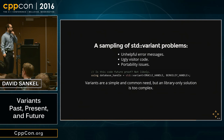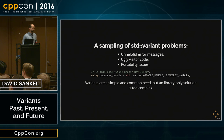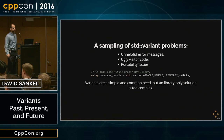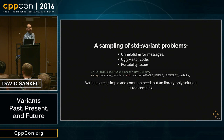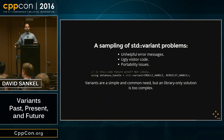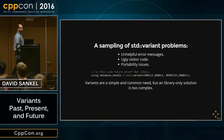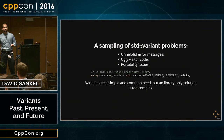A sampling of std::variant problems: if you use them a lot, you get unhelpful error messages because it's template programming. The code for visitation is kind of ugly. There are portability issues — for example, a database handle variant: if Oracle handle and Berkeley handle end up having the same underlying type at some point in the future, that would be bad. Variants are simple and a common need, but a library-only solution is too complex. But if that's all you got, use it — it's going to make your code a lot better.